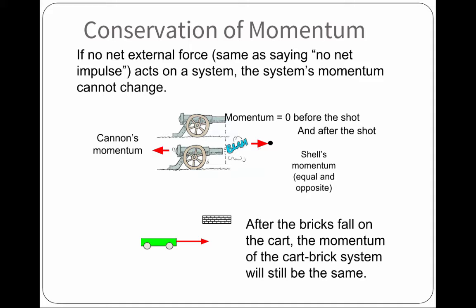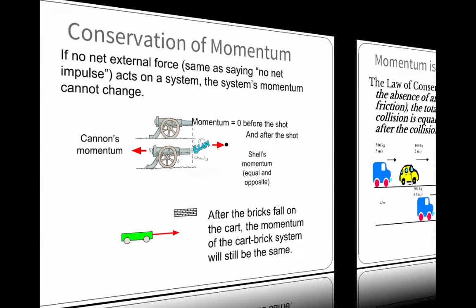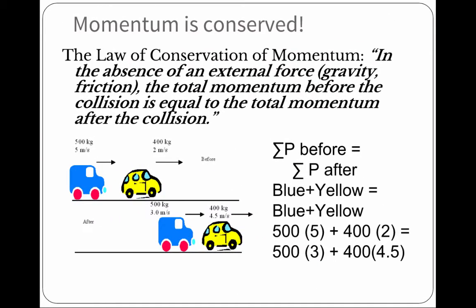Notice we're talking about momentum. Not velocity, not mass, but momentum. If the green cart is going quickly, and the bricks are falling, after the bricks fall on the cart, the momentum of the cart and the brick system will still be the same. Alright, so momentum is conserved.